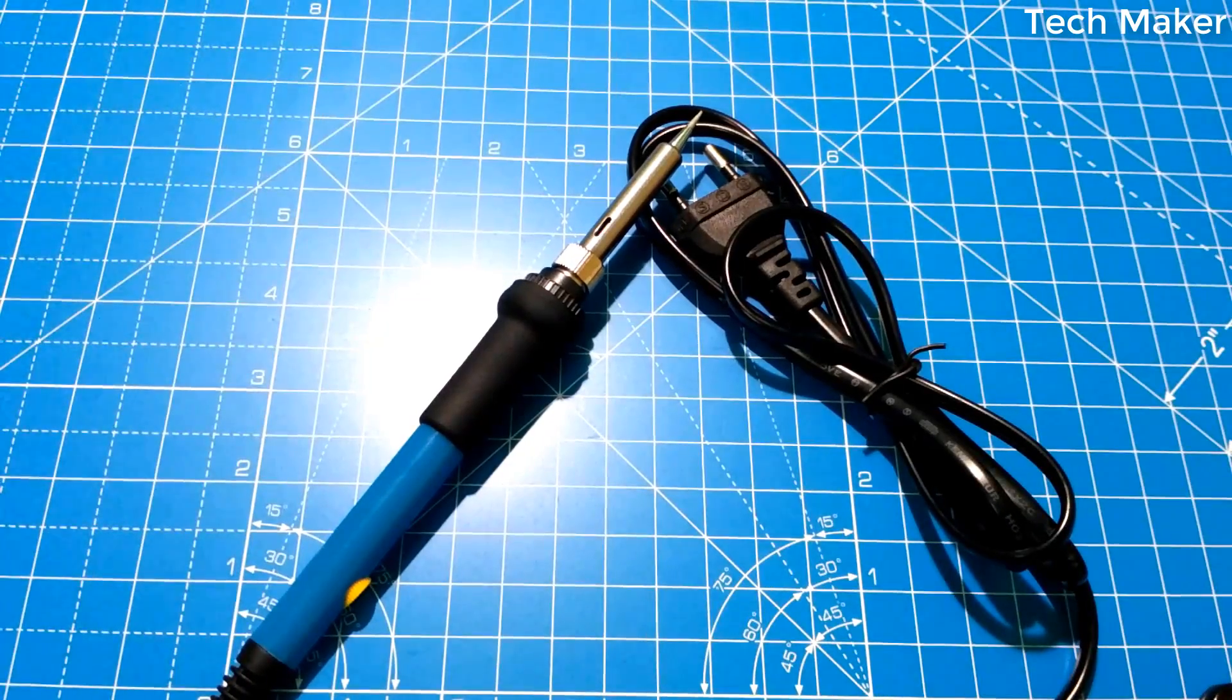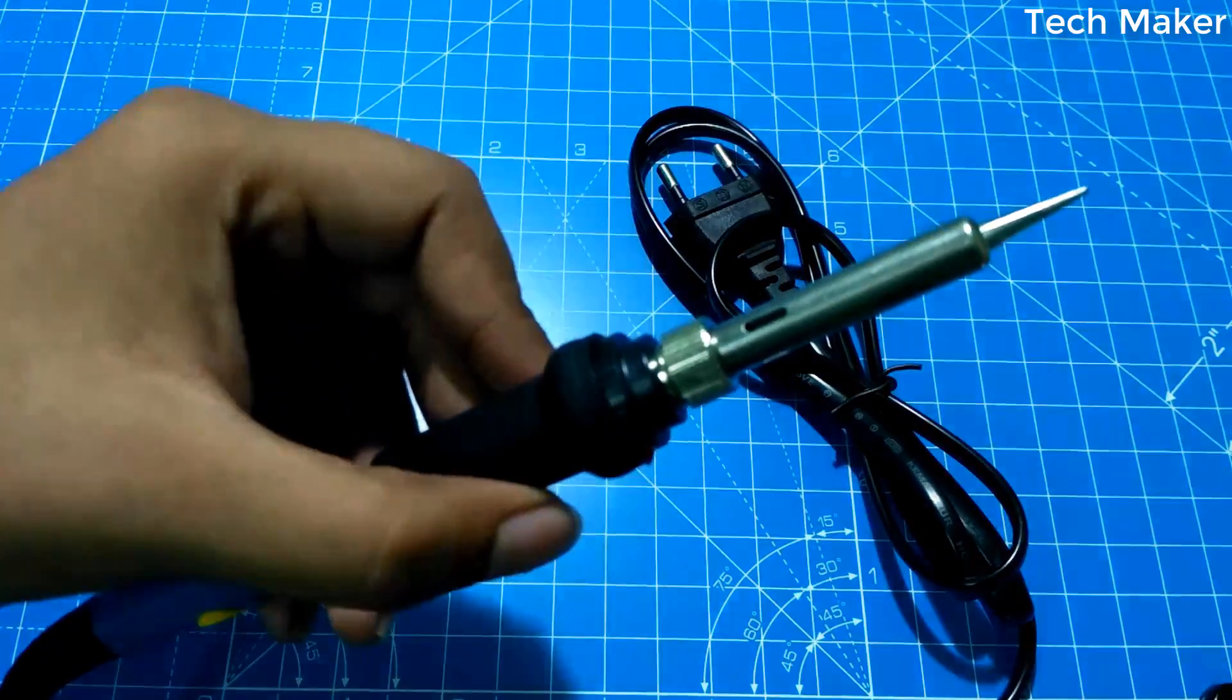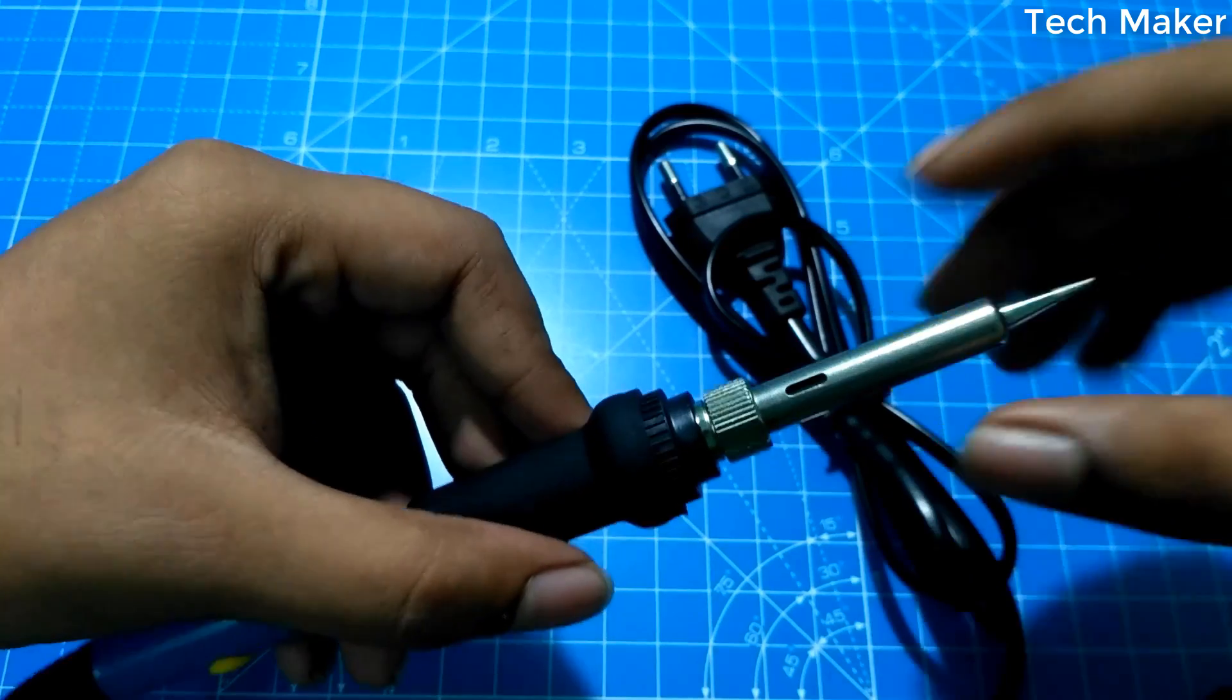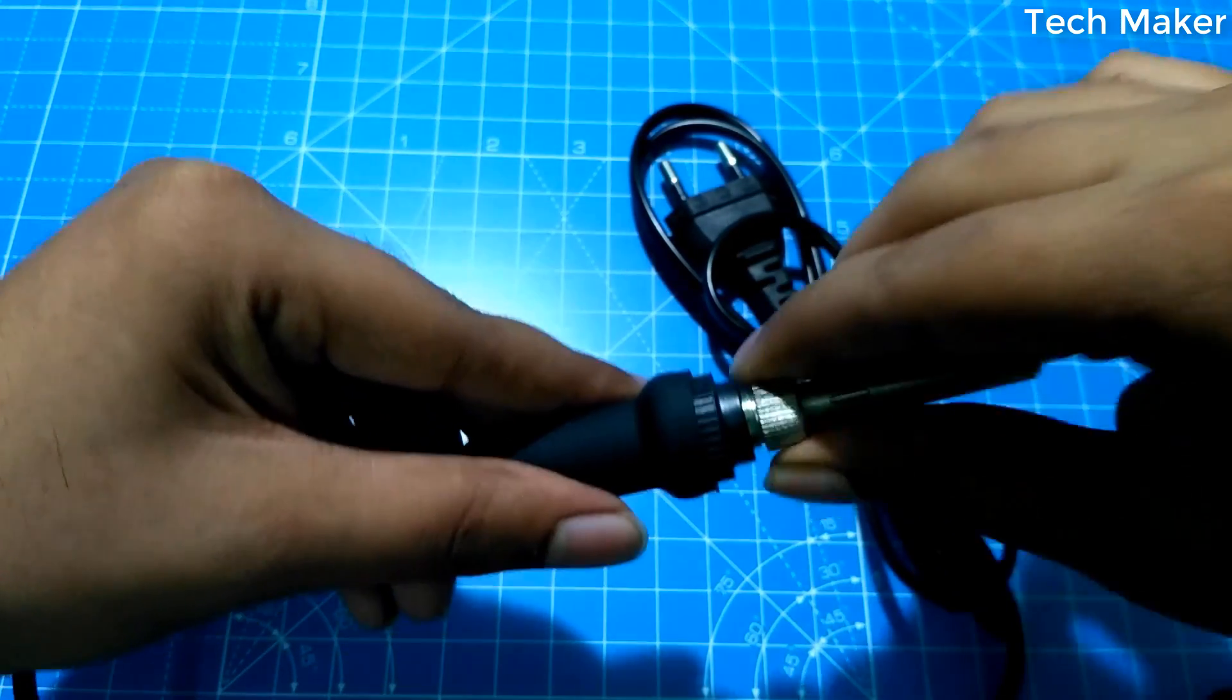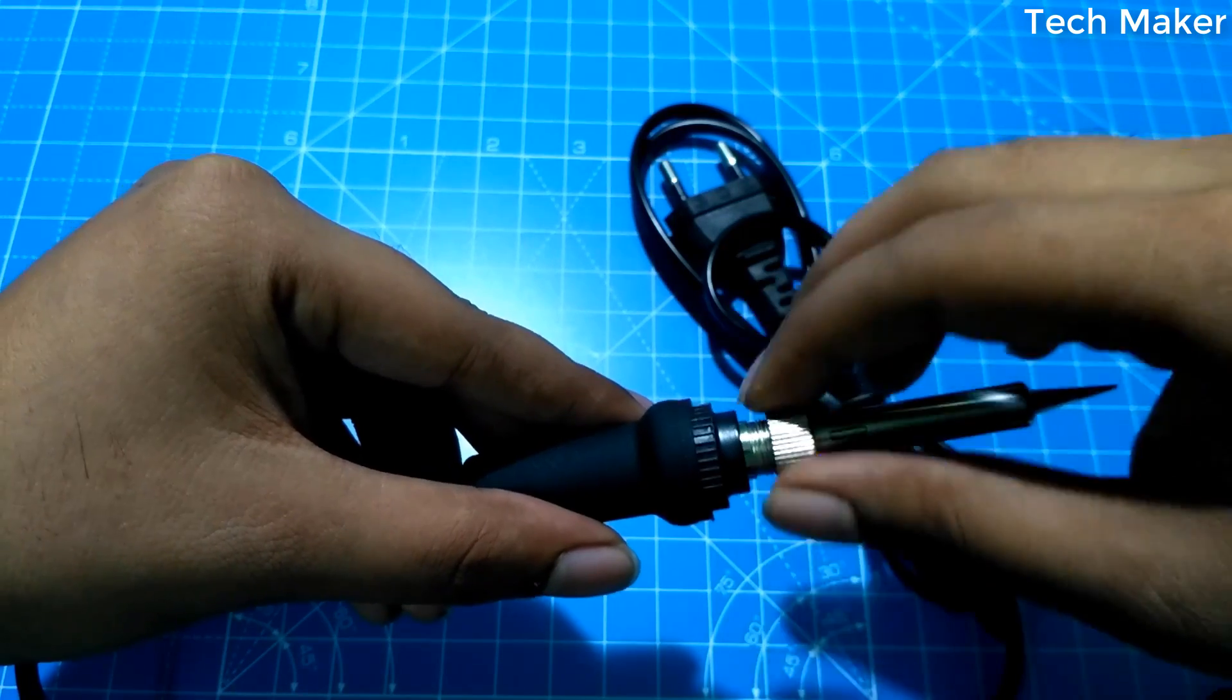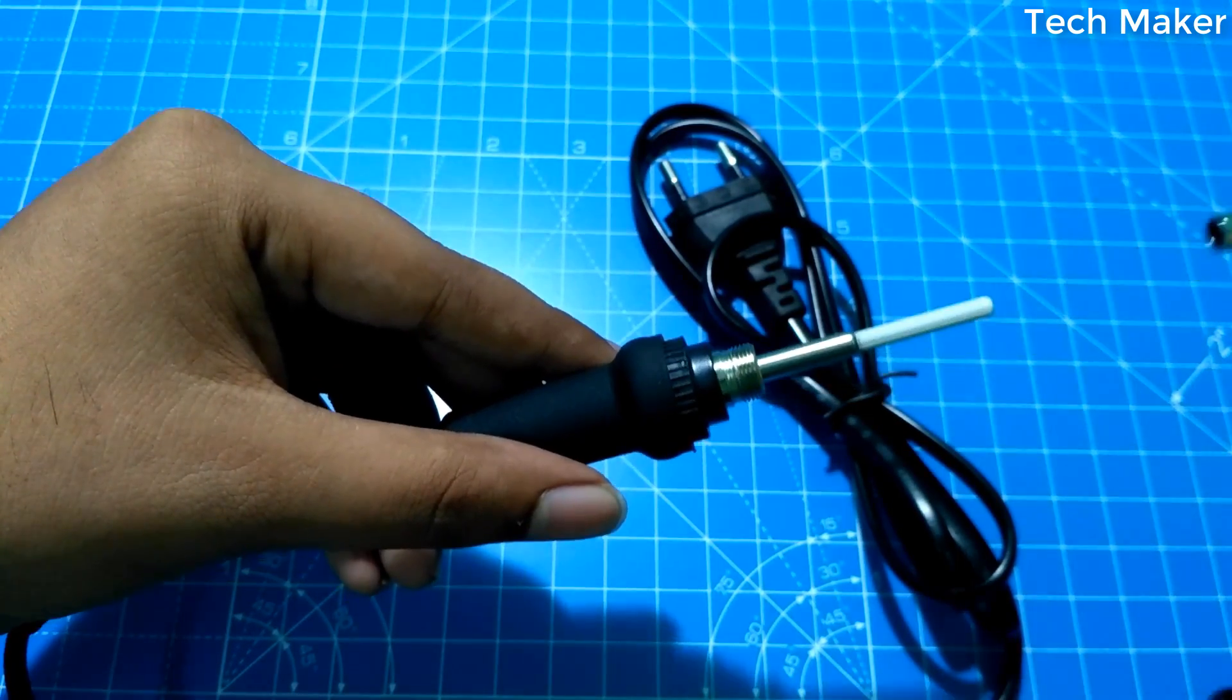First have a look at this soldering iron. Here you can see the tip, which is a replaceable tip. If you want to replace the tip, you have to unscrew it and replace the tip with another.